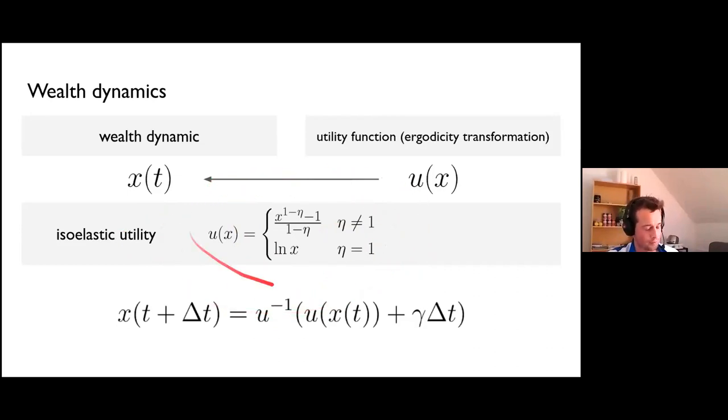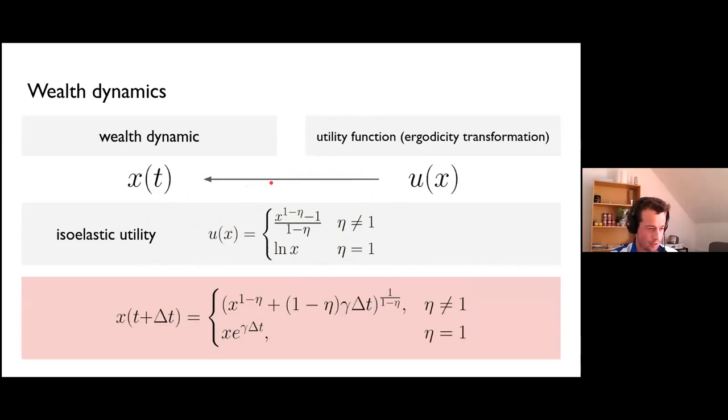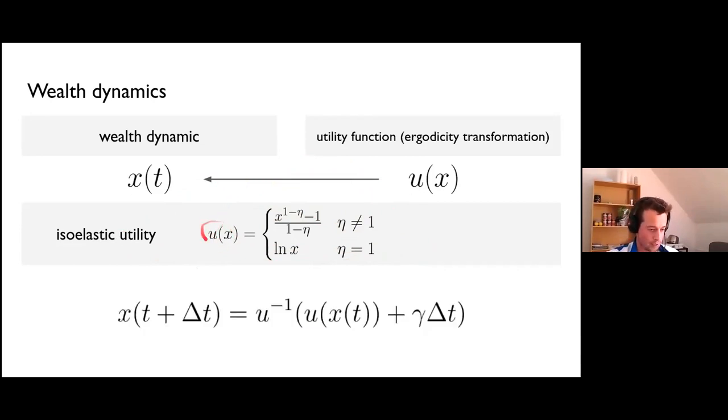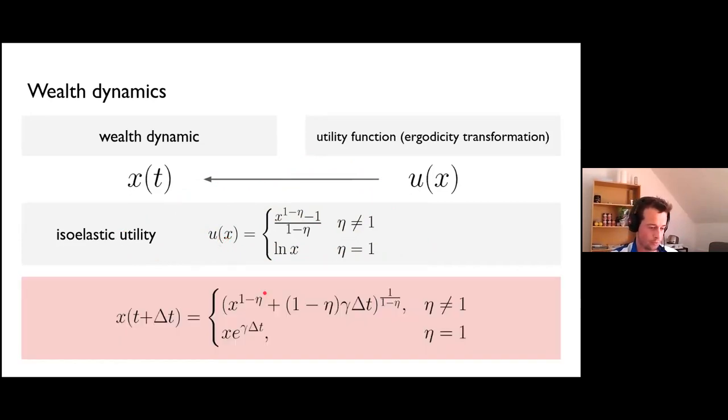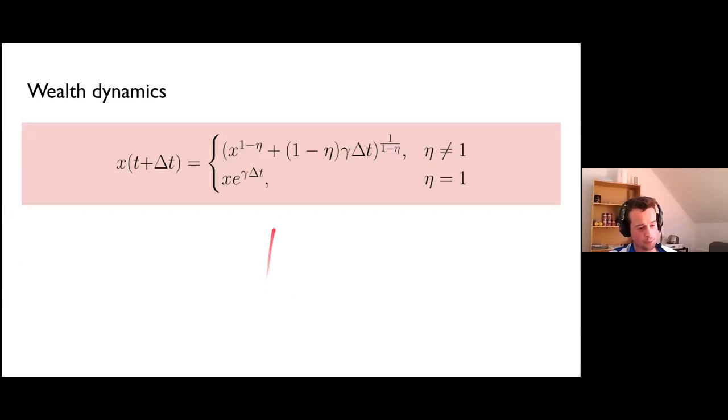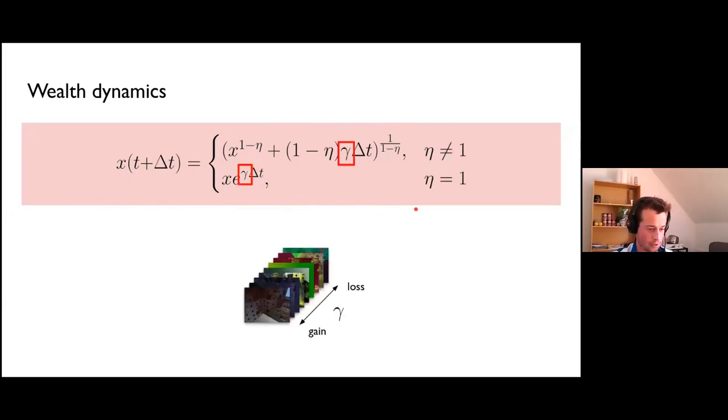The transformed wealth should grow at a constant rate over time, expressed as this derivative. In other words, we need to find a wealth function x(t) that will be linearized by applying the ergodicity transformation. We can now use the definition of derivative and drop the limit to consider final wealth to get this equation. After reorganizing this equation, we get something like this. We get the equation for updating wealth after time delta t, which says that we have to do three things: first transform the initial wealth, then add the constant value times amount of time elapsed, and then apply the inverse ergodicity transformation to go back to the wealth.